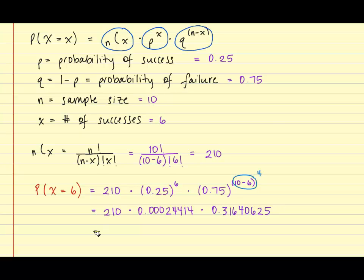And finally, in this last step, we'll multiply each value by each other, and we obtain 0.0162. And thus the probability that 6 Americans do not wear a seatbelt out of this sample of 10 is 0.0162.